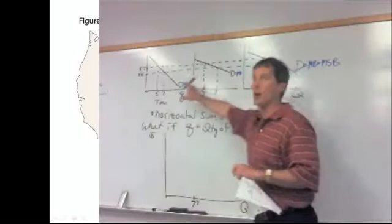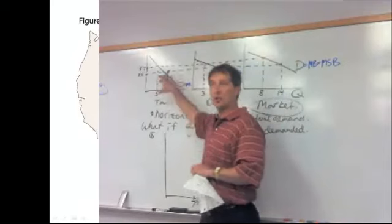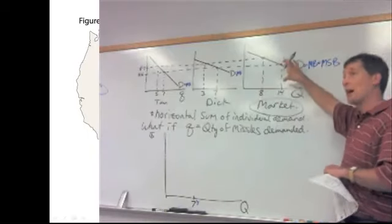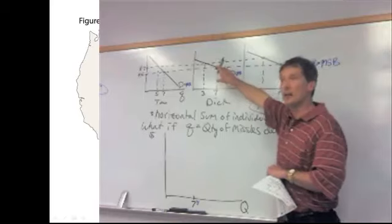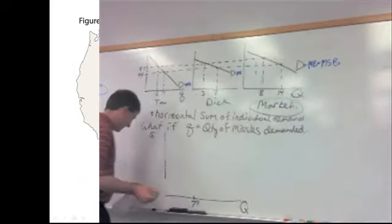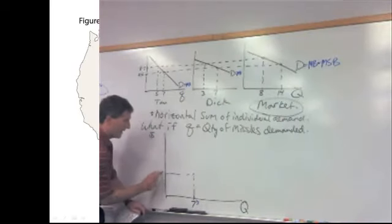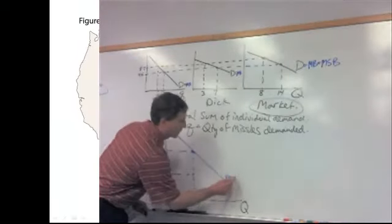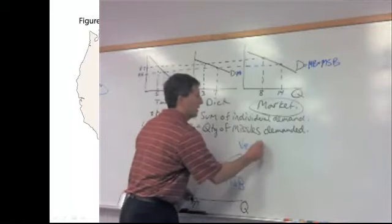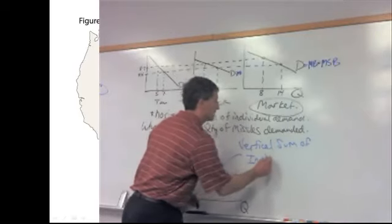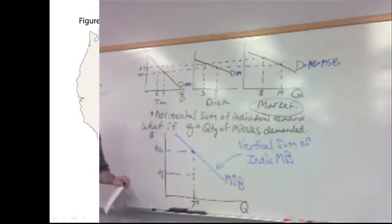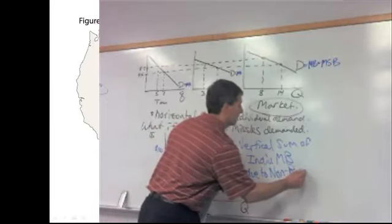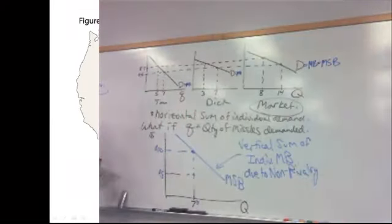That's different than what was going on with the cheeseburger. Tom and Dick don't share that cheeseburger. They are rival in consumption. When we look at the benefit to society of the last unit produced, the benefit is the price of five, the horizontal sum. But now the benefit of the seventh one is not five, but ten. It's the vertical sum. The demand curve, the marginal social benefit curve, is the vertical sum of individual marginal benefits due to non-rivalry of those missiles. Great thing to know for the test.